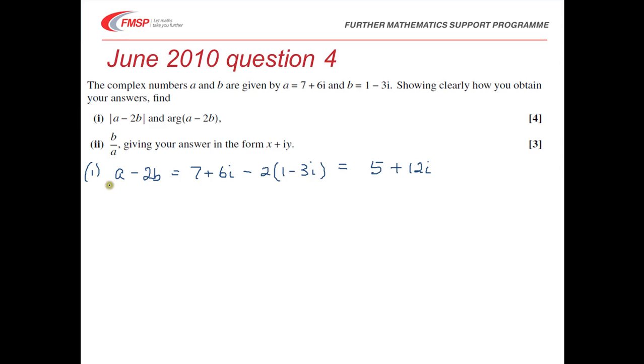We're then asked to find this modulus. So the modulus of A minus 2b now is going to be the modulus of 5 plus 12i. And remember the modulus is defined as the square root of the square of the real part plus the square of the imaginary part. So it's the square root of 5 squared plus 12 squared which of course is the square root of 169 which is just 13 which of course you may well be able to just write down if you know your Pythagorean triples.